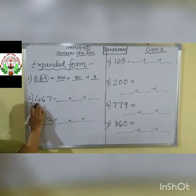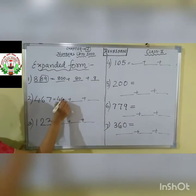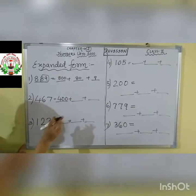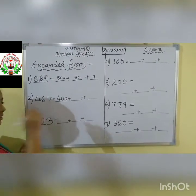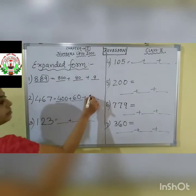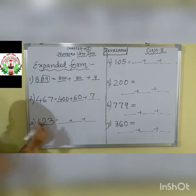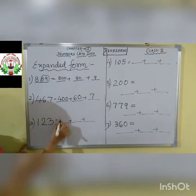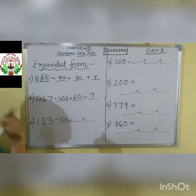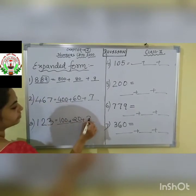Next: 467. 400, then in 67 — 60, how are you writing? 6-0. Then the last number: 7. So 467 = 400 + 60 + 7. Next: 123. 100, then 23 — 20, how are you writing? 2-0. Then 3. So 123 = 100 + 20 + 3. Understood?